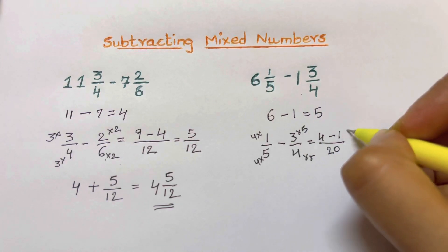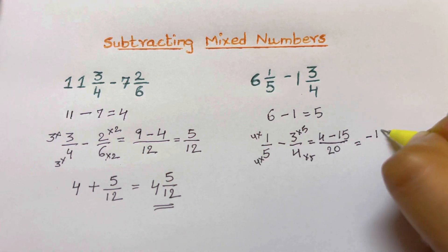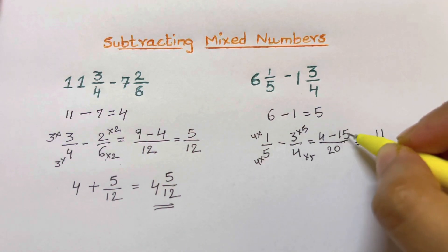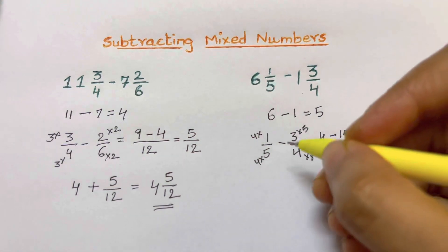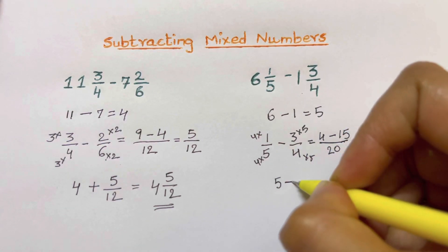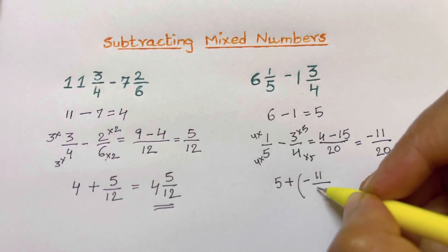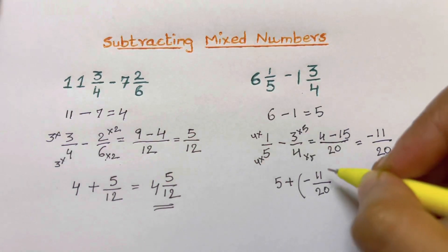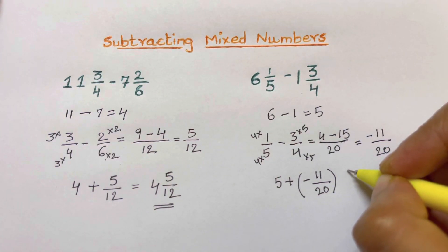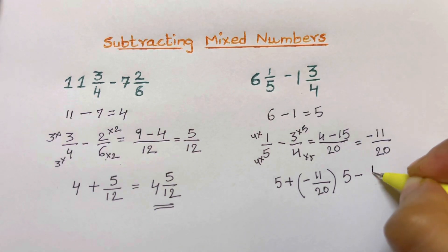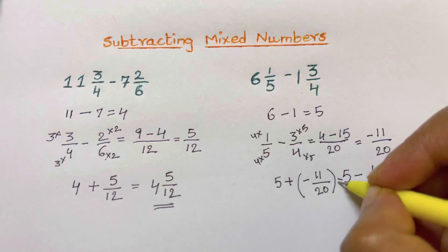3 times 5 is 15, so you get 4 over 20 minus 15 over 20, which equals minus 11 over 20. Now combining with the whole number: 5 plus negative 11 over 20, which is 5 minus 11 over 20.